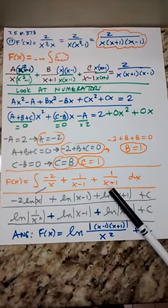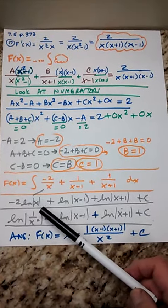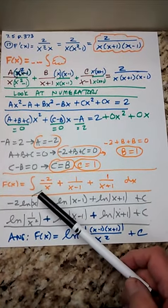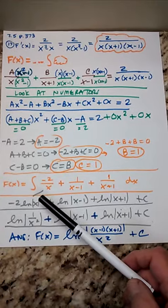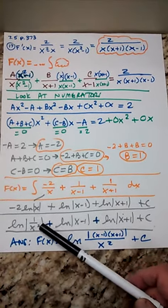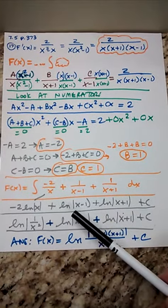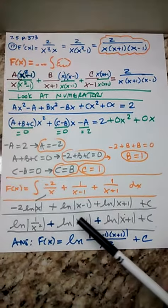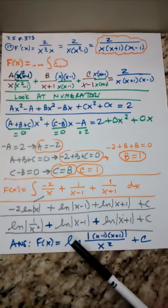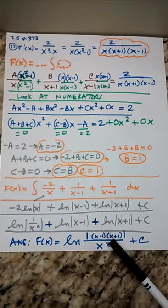Those are all natural logs. The negative 2 can be raised, moved into a power, so it's got natural log of x to the negative second, which is 1 over x squared. We have these other two natural logs. When you add natural logs, you can put that together as a multiplied natural log.